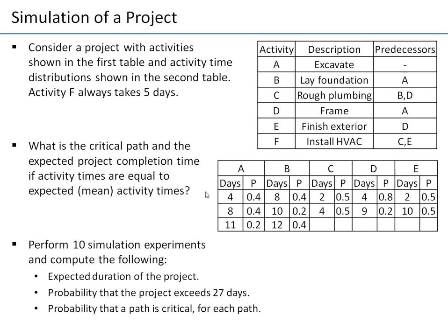The question is: how long will the project take? What can we promise to our customer regarding project duration? We're going to solve it in two stages: first, we'll compute the expected activity times for each activity and use the Critical Path Method assuming activity times equal expected times. Then we'll simulate 10 experiments to compute performance measures.